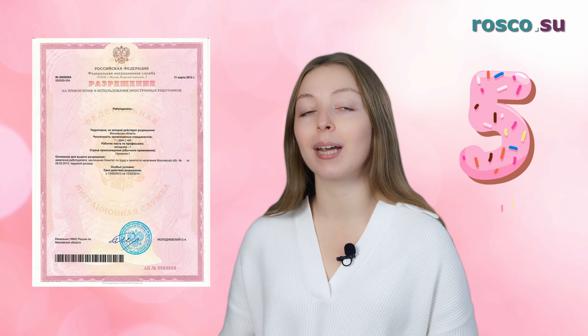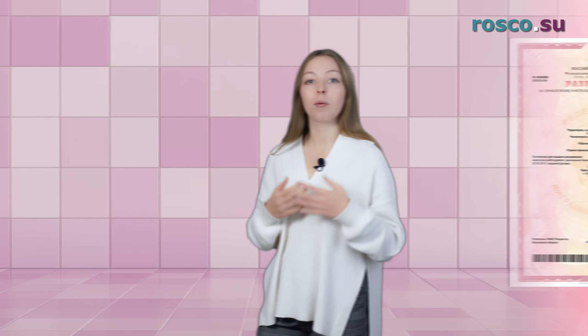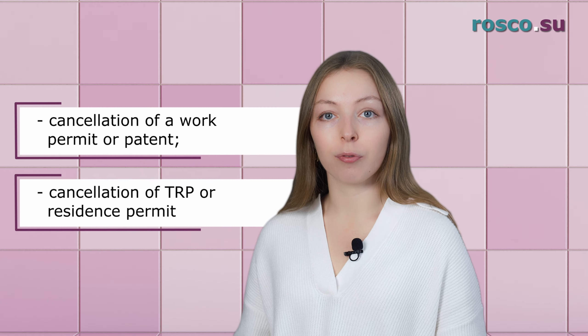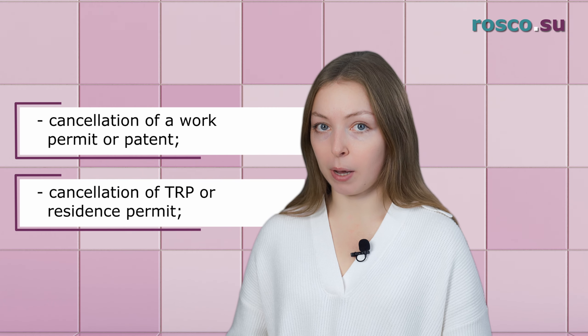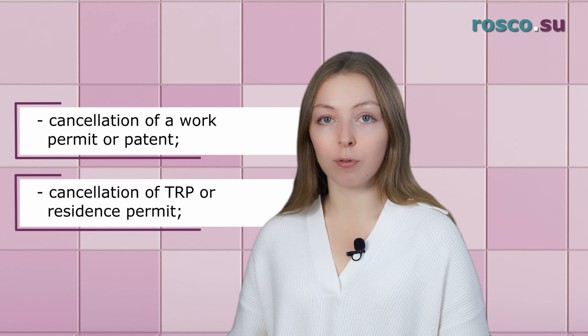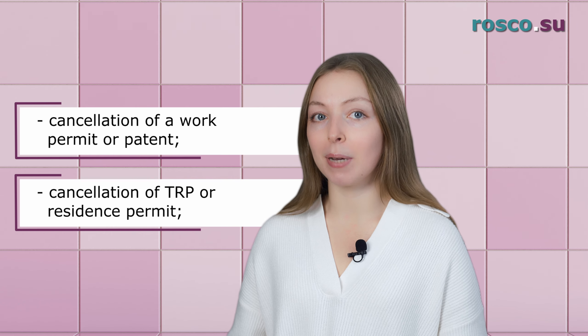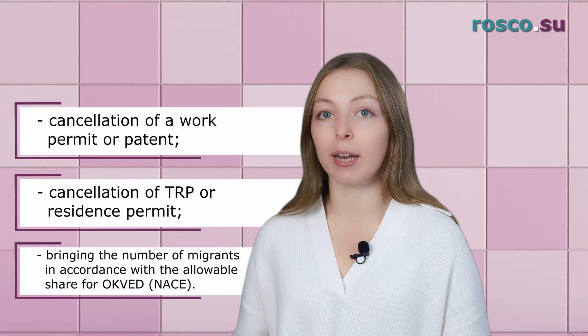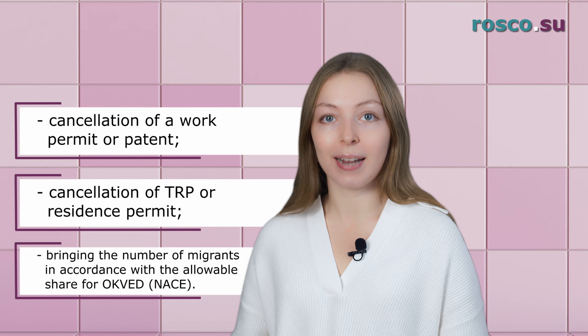Dismissal through suspension from work is also possible if the employer itself has suspended or has an expired permit to hire foreigners. The most common grounds for dismissal without prior suspension from work are cancellation of a work permit or a patent, or cancellation of TRP or residence permit. Cancellation does not involve any delay, but results in the immediate dismissal of the migrant, bringing the number of migrants in accordance with the allowable share.